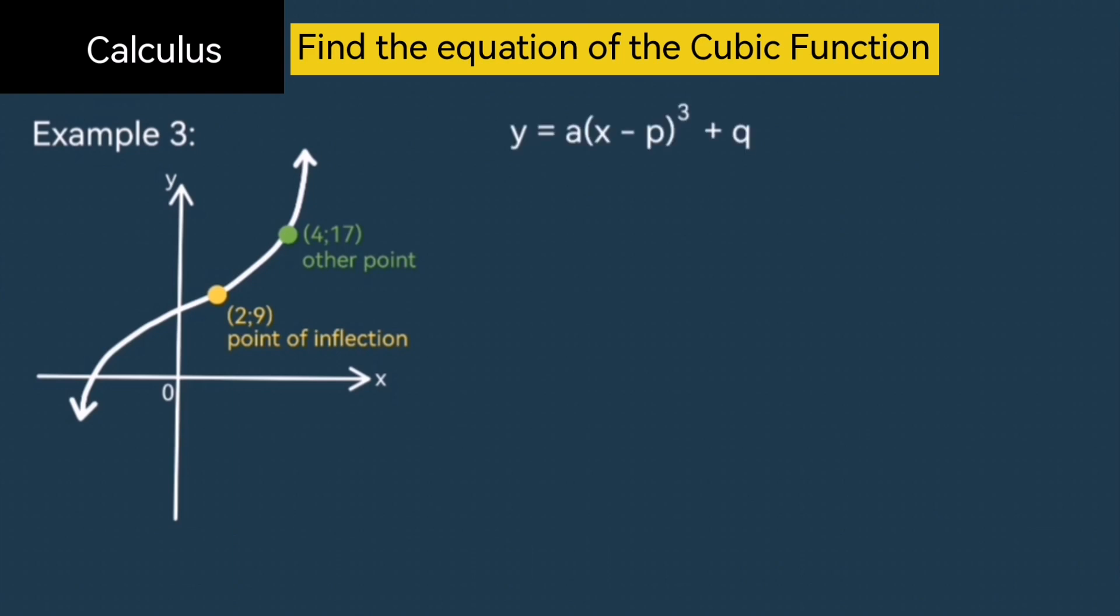Y equal to a times x minus p cubed plus q. Now p and q in this formula represents the x and y values at the inflection point. So p would be 2, and q would be 9. Substitute that in, and you'll get y equal to a bracket x minus 2 cubed plus 9.